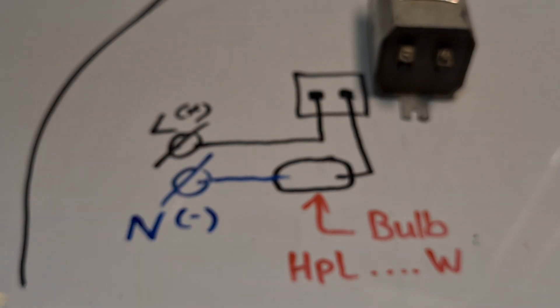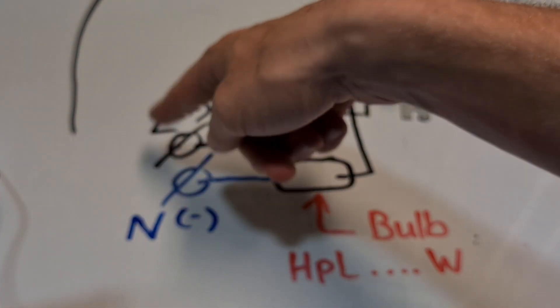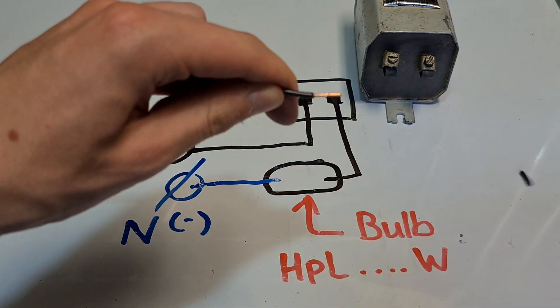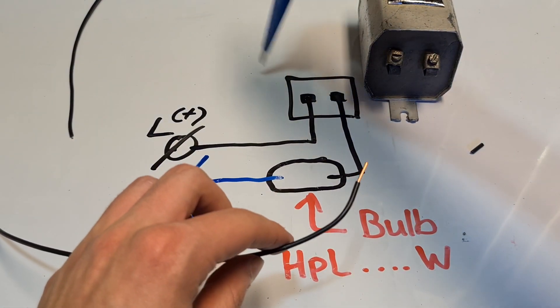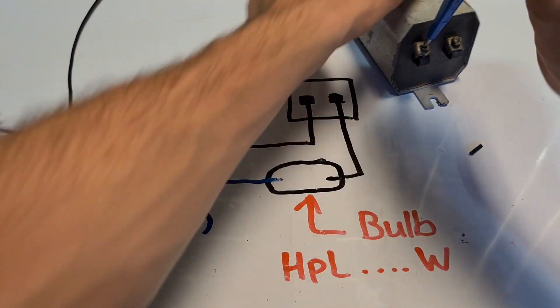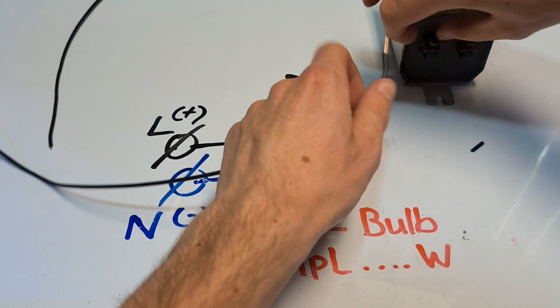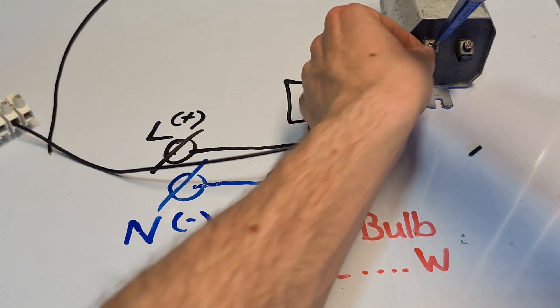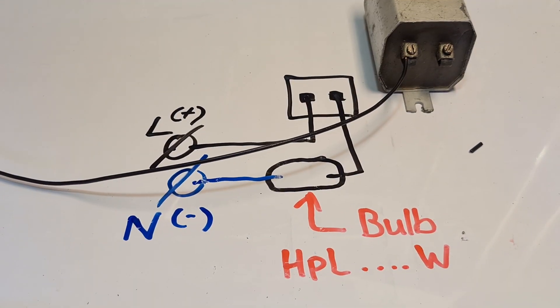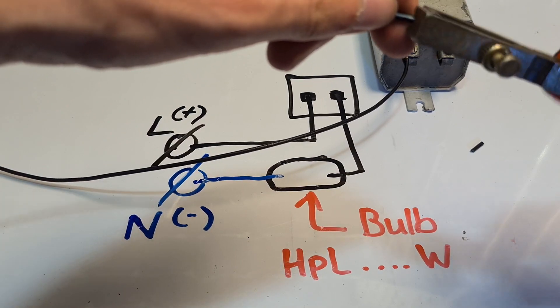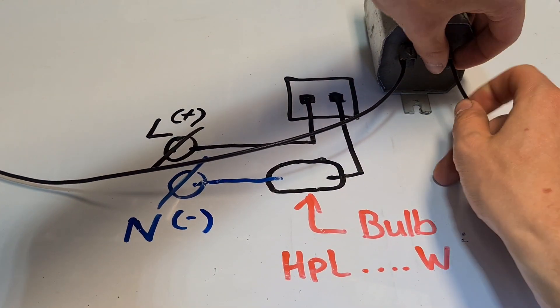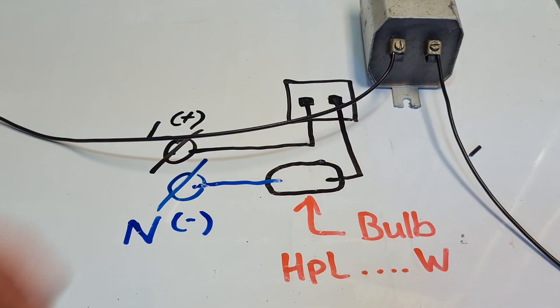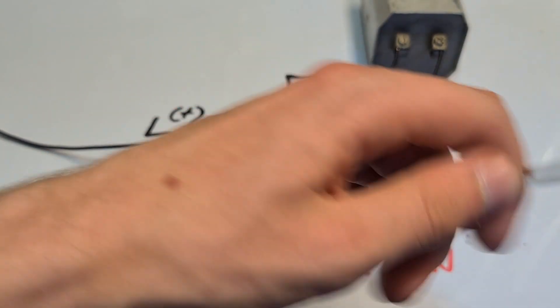Let's start with connecting the actual ballast. So this here is the part where you connect the cable. What you want to do is strip the cable to the left, here on the ballast. Then get the cable that goes to the socket and connect it on the other side of the ballast.